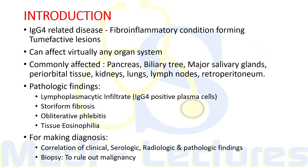The pathologic findings include a lymphoplasmacytic infiltrate with a high percentage of IgG4-positive plasma cells. IgG4 is a subclass of immunoglobulin G. There is a tendency to form storiform fibrosis — storiform means like a woven mat, so the cells are arranged in a storiform pattern. The inflammatory infiltrate also targets blood vessels, particularly veins, through an obliterative process, giving rise to obliterative phlebitis.